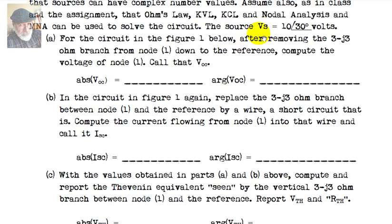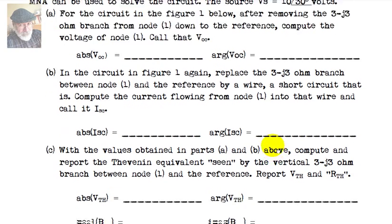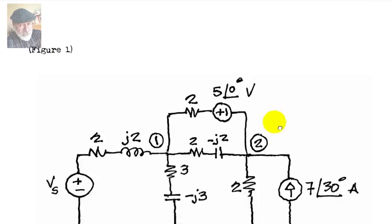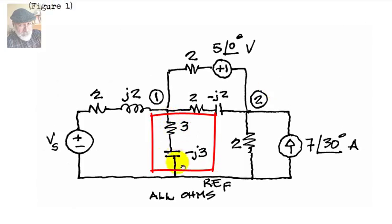In this circuit, the source Vs on the left has a value of 10 volts with 30 degrees. We are tackling Part B — we've already solved Part A in a previous video. In the circuit in Figure 1, we replace the impedance three minus j3 ohms between node one and the reference by a wire — a short circuit. We compute the current flowing from node one into that wire and call that Isc, the short circuit current, finding its actual value and argument in degrees.